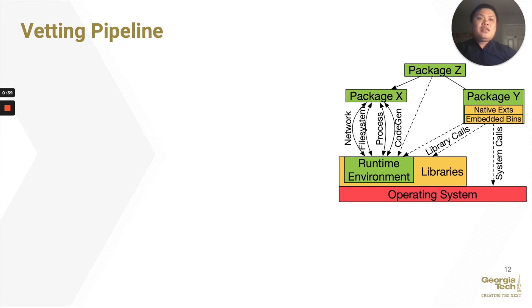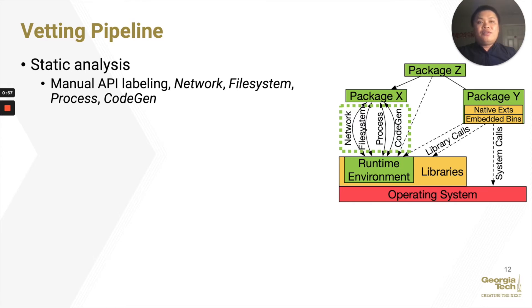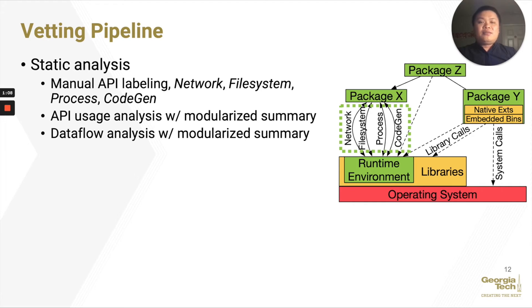Interpreted packages run on top of runtime environments and can depend on other packages. They may also have binaries that can circumvent the language runtime and directly talk to the system. In static analysis, we focus on analyzing interpreted languages and the interaction between the package and the runtime environment. In API analysis and data flow analysis, we perform modularized static analysis by working up the dependency tree and summarizing the dependencies. Alternatively, one can analyze the package together with its dependencies, but we found this to be slow for packages with many dependencies.